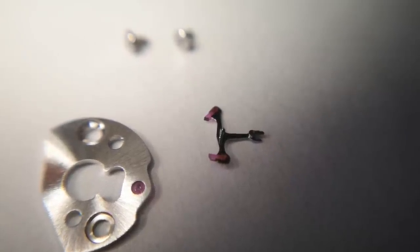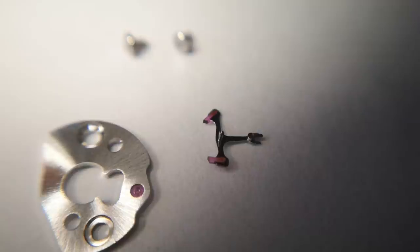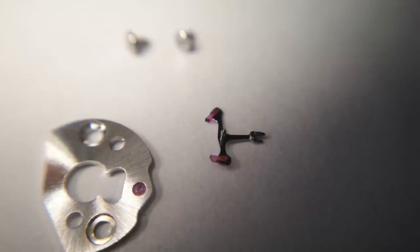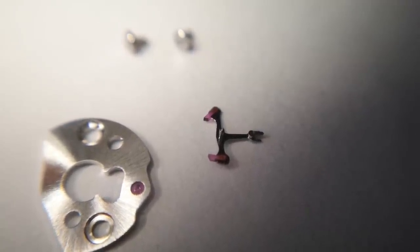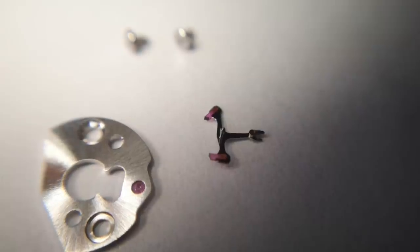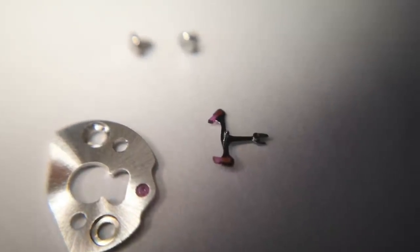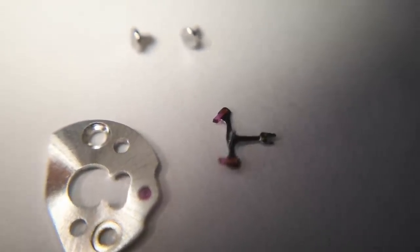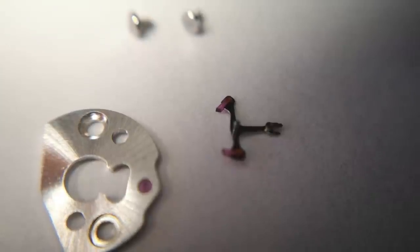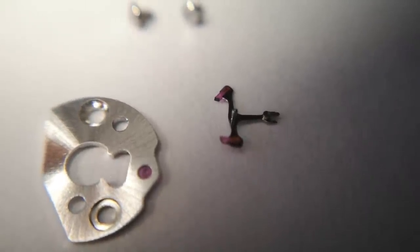Most people use a thing called Mobius 9415 for that, and it's a lubricant that you just use for that purpose and it doesn't appear anywhere else inside the watch.